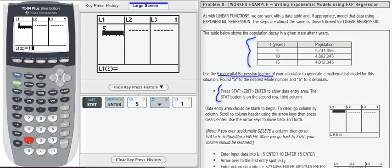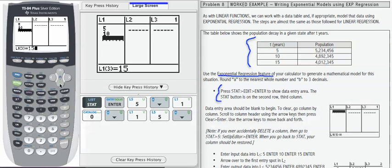So there's 5, 10, 15. I'm going to go ahead and arrow down. Then I'm going to arrow across to get to L2 and I'm going to enter those values into the calculator as well, using the down arrow to go from one to the next.